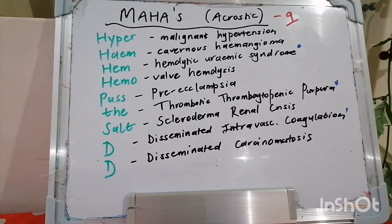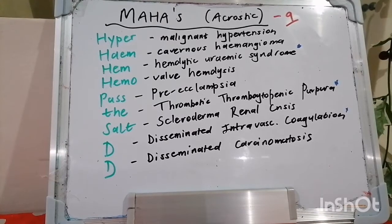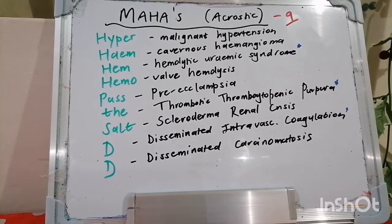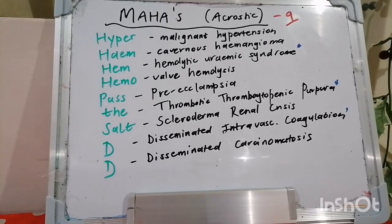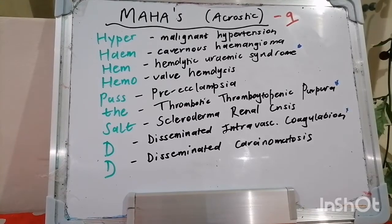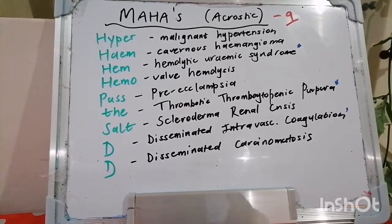Evan syndrome refers to a combination of immune thrombocytopenic purpura and autoimmune hemolytic anemia. So there you have it — a beautiful acrostic to remember microangiopathic hemolytic anemia: HYPER, HEM, HEMO, PASS, THE, SOD, DD. God bless — have yourself a wonderful day.